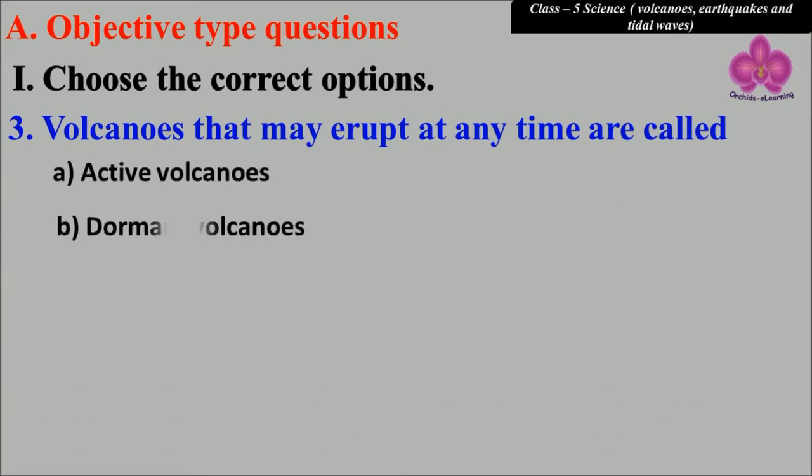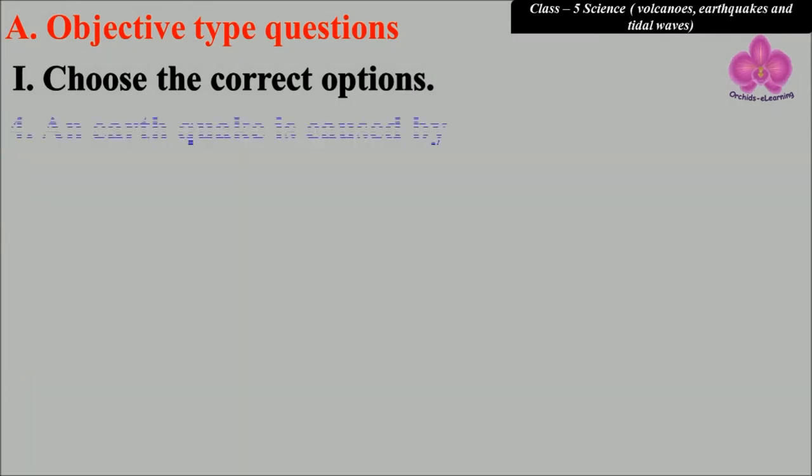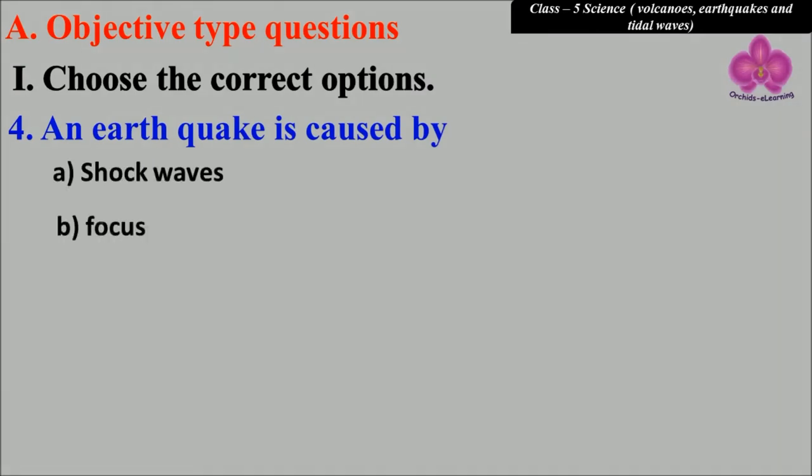volcanoes, b) dormant volcanoes, c) extinct volcanoes, and d) life volcanoes. An earthquake is caused by: a) shock waves, b) focus, c) epicenter, and d) aftershocks. The answer is a) shock waves.